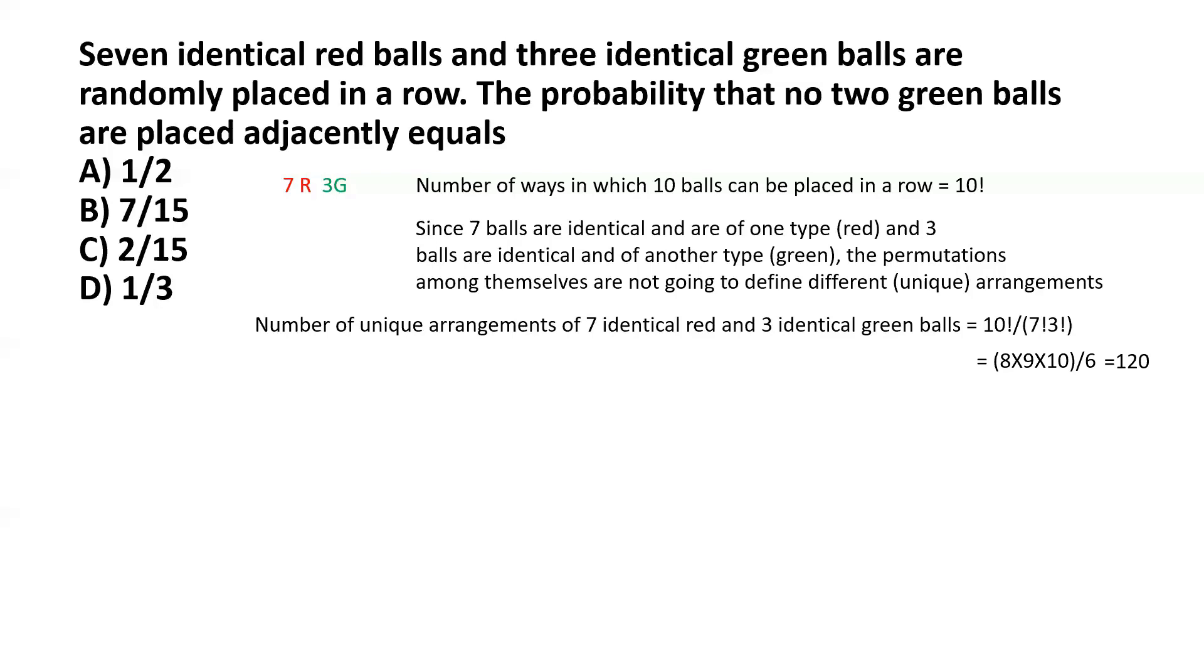Just to help in visualization, we first consider an arrangement of the seven red balls. For the green balls to be placed in such a way that they're not side by side, they have to occupy, each of them may occupy, any one of the spaces between the red balls or the spaces at either end.